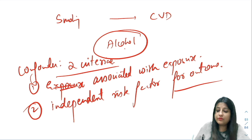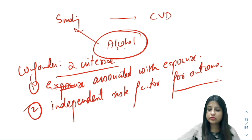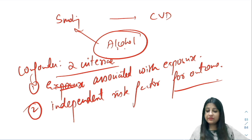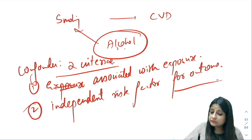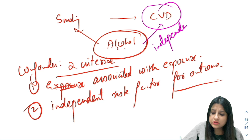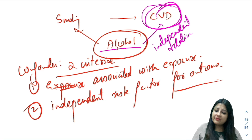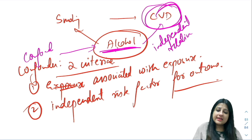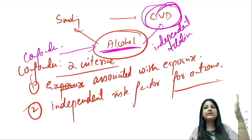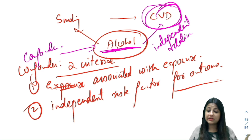If you look at alcohol — do those who smoke also drink? Research has shown yes. So the third variable is also associated with the exposure. And can alcohol independently lead to CVD? Yes, alcohol also has an independent relationship with CVD. Therefore this variable is a confounder — it must be associated both with exposure and outcome, and be an independent risk factor for the outcome.